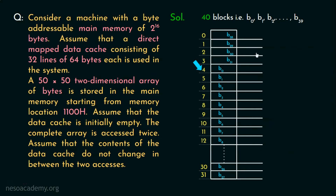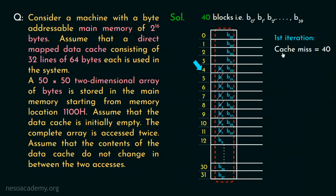However, blocks B32 through B39 have no remaining cache space. They must replace existing blocks, continuing the wrap-around. In the first iteration, all 40 blocks cause cache misses since the cache was initially empty, giving 40 cache misses.